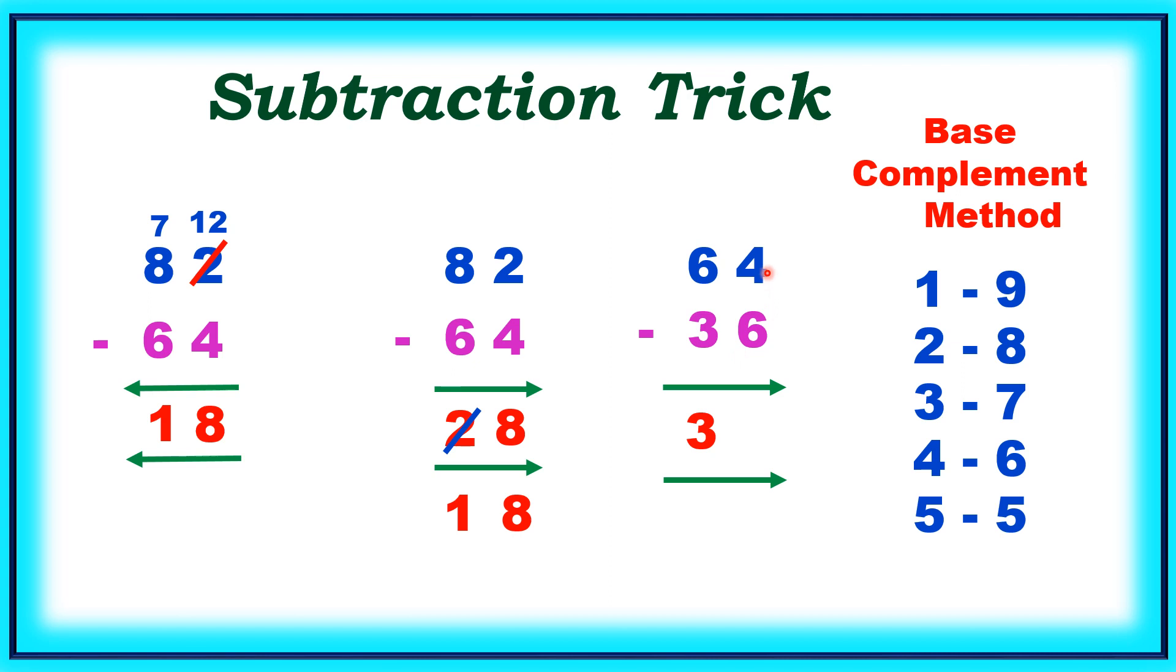But the next number you cannot subtract it. Hence 3 will become 2. And then 6 complement is 4. 4 plus 4 equals 8. 28 is the answer. Is it not easy?